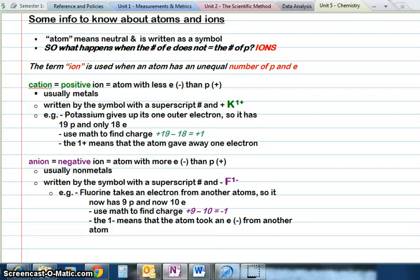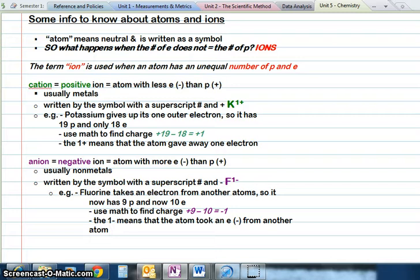when we use the word atom, it means that our particle is neutral. We write the symbol, and it means that the electrons and the protons are equal. If they are not equal, that's when we have an ion.